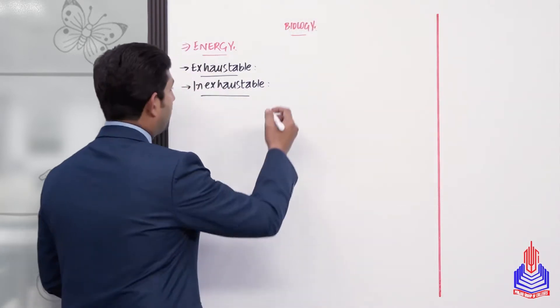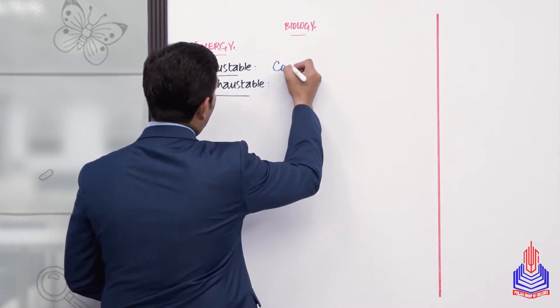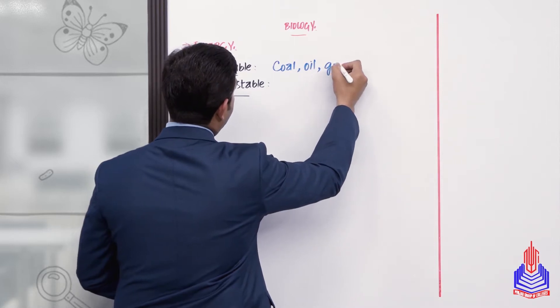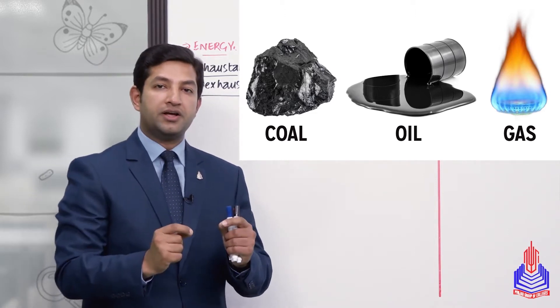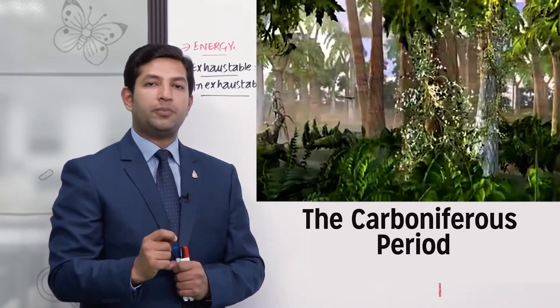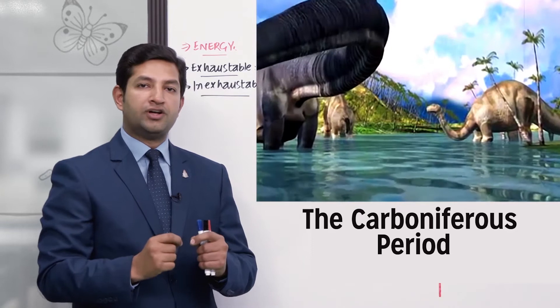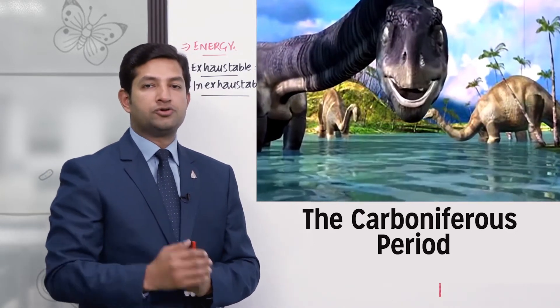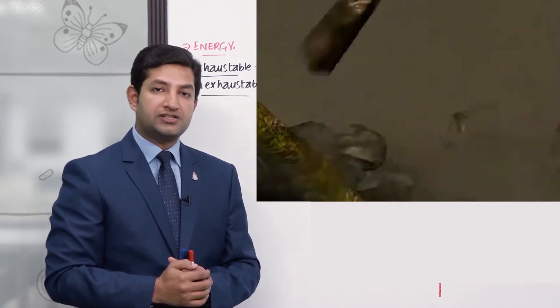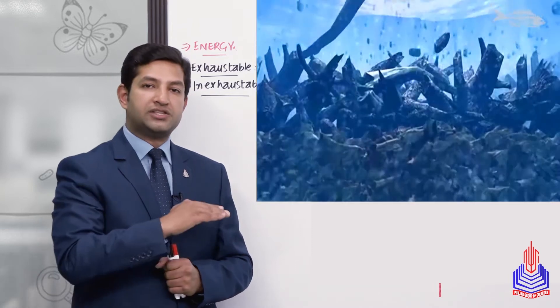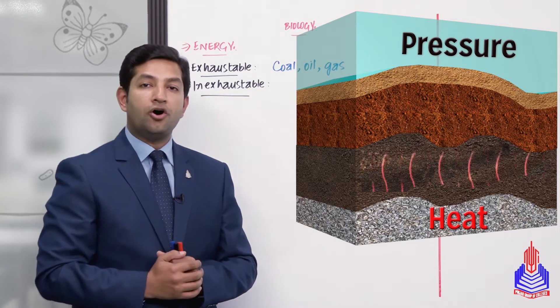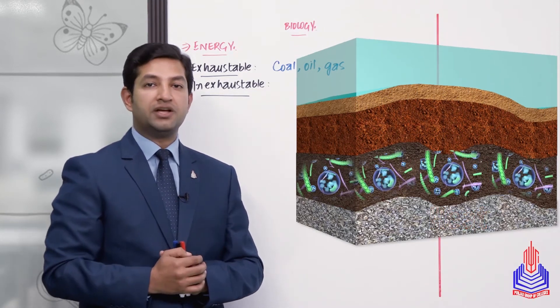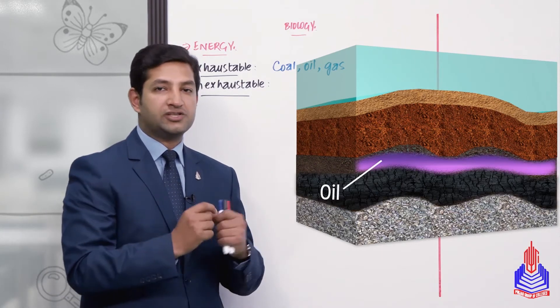تین major fossil fuels ہیں: coal، oil اور gas۔ یہ fossil fuels لاکھوں سال پہلے زمین کے اوپر موجود درخت، ferns اور bryophytes کسی catastrophic event کی وجہ سے زمین کے اندر دب گئے اور sediments میں دھنستے چلے گئے۔ وہاں high temperature اور high pressure کی وجہ سے anaerobic activity سے یہ کوئلے، تیل اور gas میں convert ہو گئے۔